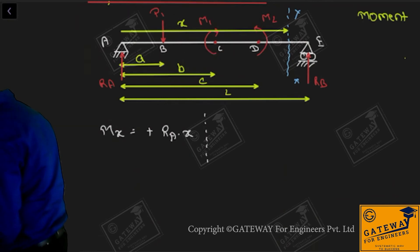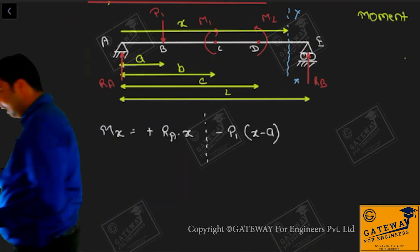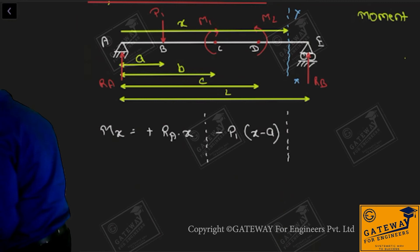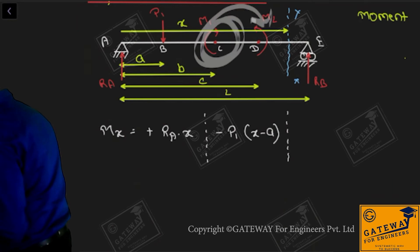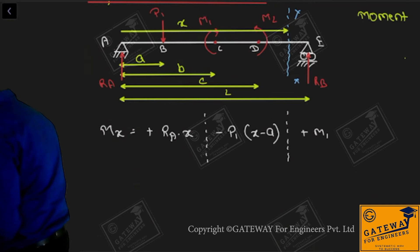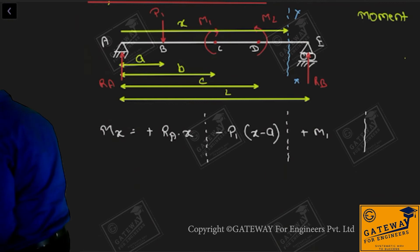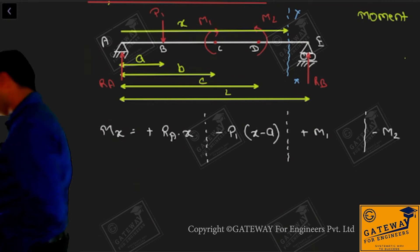We write minus P1 into (x minus a), with a vertical line. After that, this M1 is clockwise, so it will cause sagging, so we write plus M1. After that there is one more moment M2, which is anti-clockwise, meaning it is causing hogging, so we write minus M2.